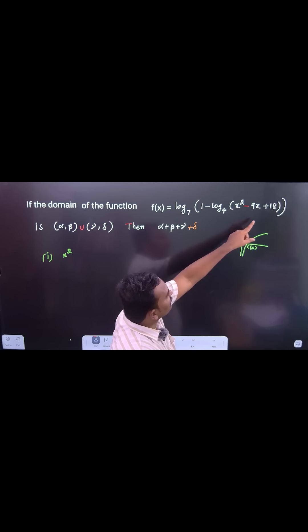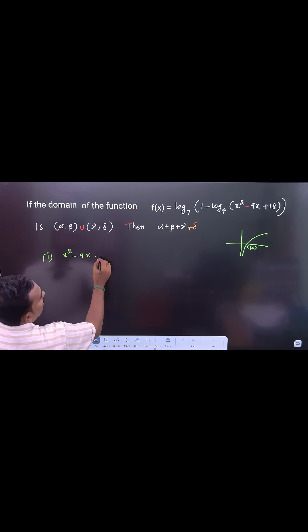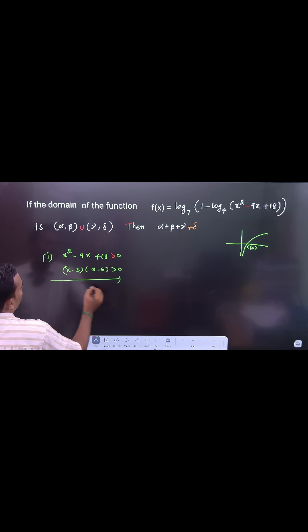x² - 9x + 18 for log base 4. Therefore x² - 9x + 18 is greater than 0. Solve this: (x - 3)(x - 6) is greater than 0. You can use wavy curve method.